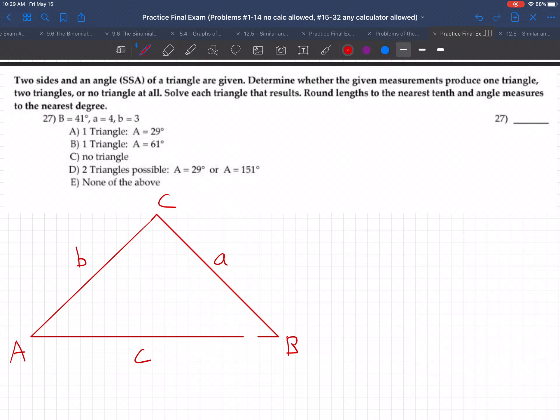So I'm getting back to it here. Can't fix this triangle. There we go. All right, so now what did they give us? They gave us capital B is 41 degrees, so this angle right here, 41 degrees. Little a is 4, and little b is 3.